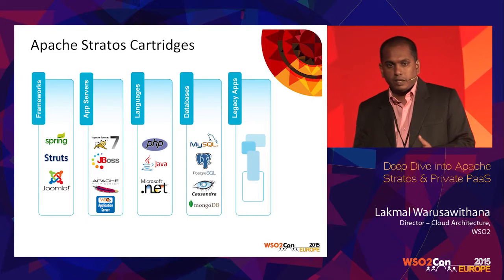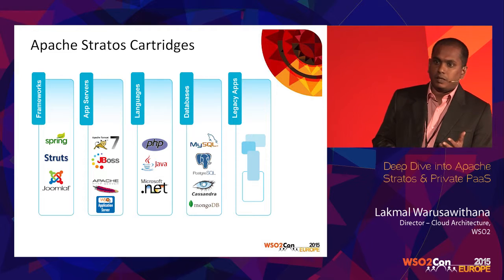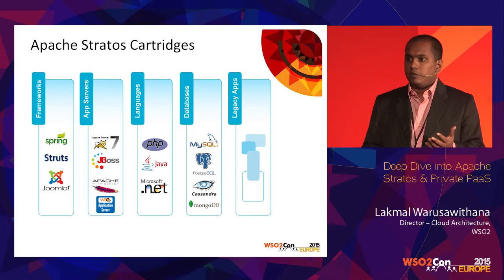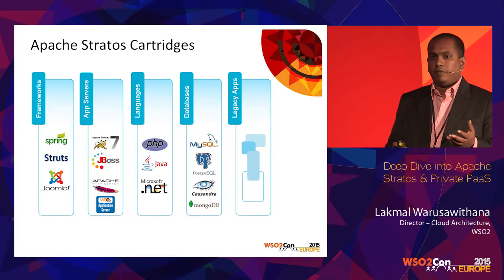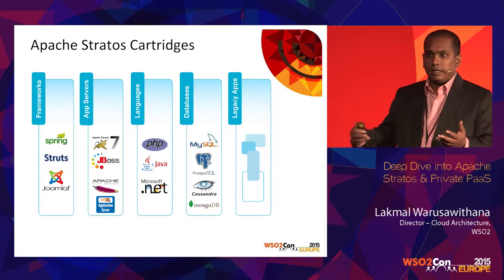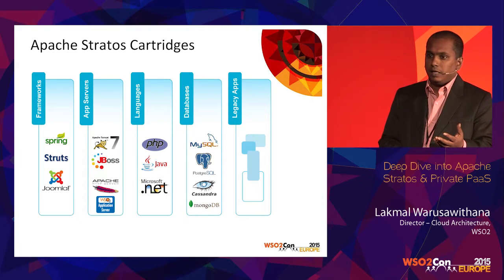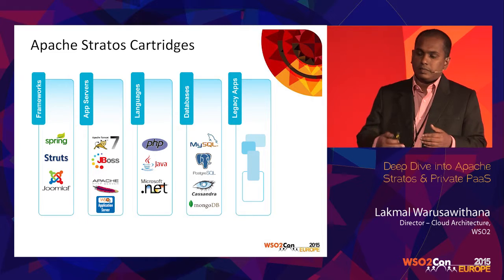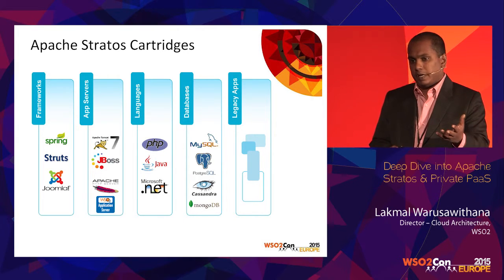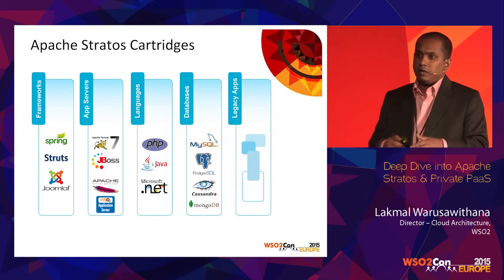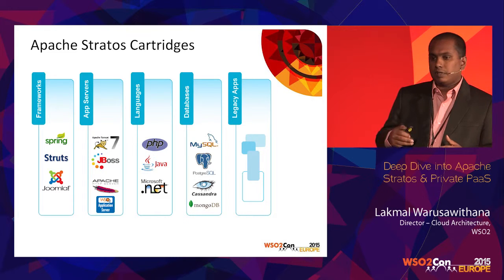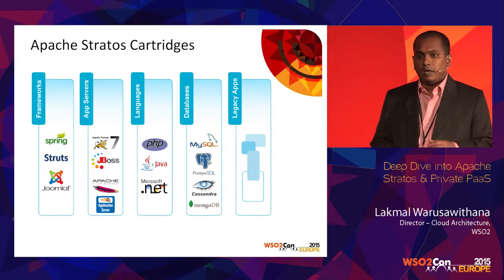Talking about cartridges — a cartridge is like building your own application plus the cartridge agent. For example, if you want to create a Ruby cartridge, you install Ruby. In the case of Docker, you install Ruby in a Dockerfile and install the cartridge agent into the Dockerfile, and we call it a cartridge. The cartridge agent communicates with Stratos and with your application — that is the communication channel. It can monitor your application, monitor its health, and provide the lifecycle state of the Stratos component.